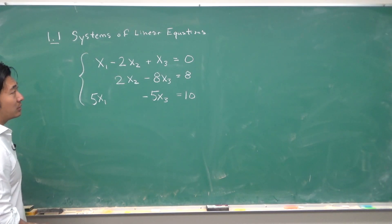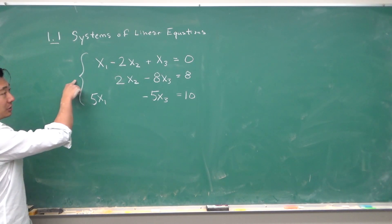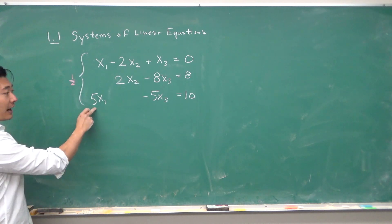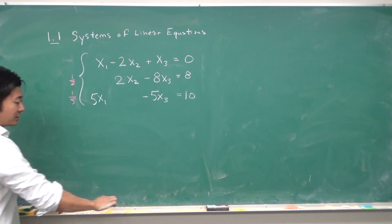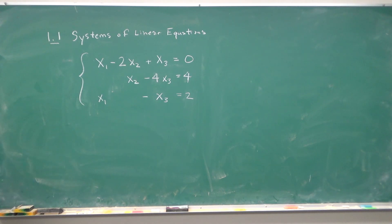The first step that we can do is we can divide this equation by 2 and we can divide this equation by 5 so that our equations become something like this.